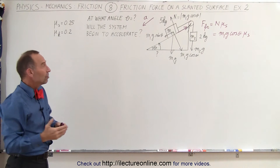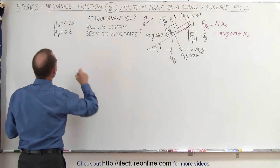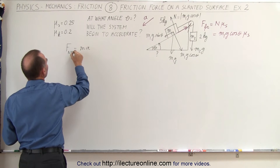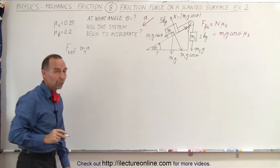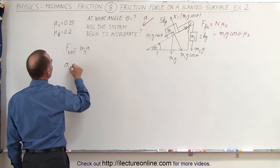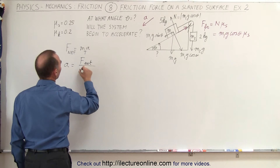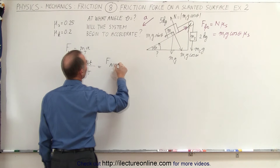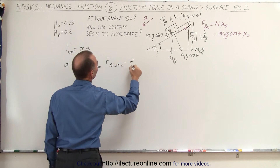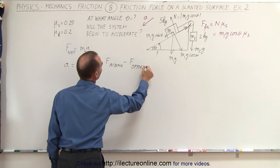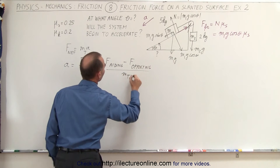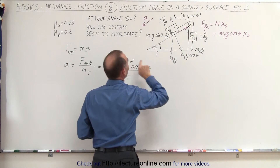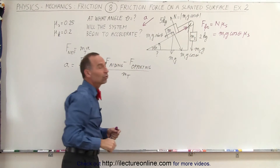Now, in order for there to be an acceleration, there must be a net force. We know that F equals ma, or more specifically, the net force on the system equals the total mass times its acceleration. That means acceleration equals the net force divided by the total mass — all the forces aiding the acceleration minus the forces opposing the acceleration, divided by the total mass. Forces aiding are in the same direction as the assumed acceleration; forces opposing are in the opposite direction.